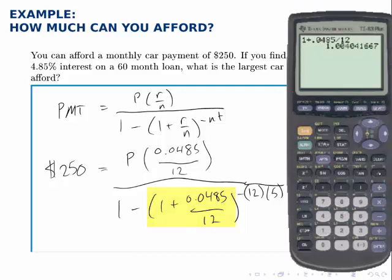Raise that answer to the negative 12 times 5, and then take 1 minus that answer.